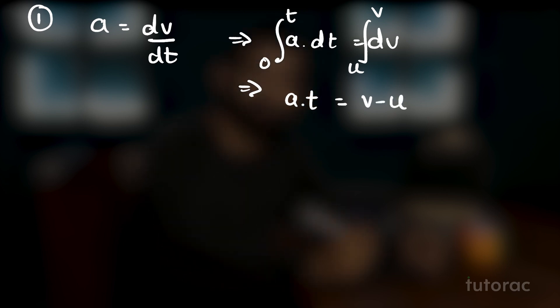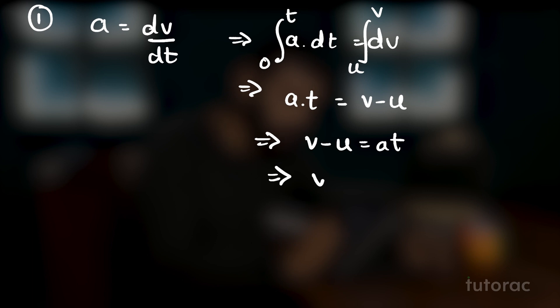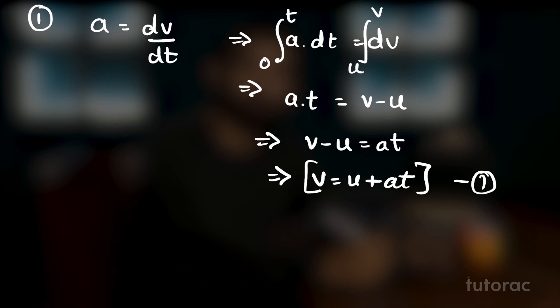If we integrate both sides and substitute the upper and lower limits, we get a·t equals v minus u. Rearranging the terms, we get v minus u equals at, and taking u to the right-hand side, we get v equals u plus at. This is the first equation of uniformly accelerated motion.